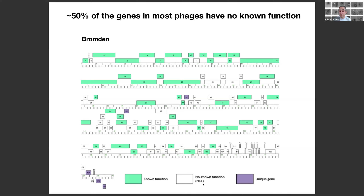A real challenge in phage research is to understand what all these other genes do. In the context of the course, students doing the annotation are both confirming the auto-annotation, but also trying to do their own discovery research to see if they can find a new function that hasn't been found previously. So we decided to try to implement AlphaFold into this process.